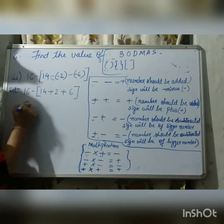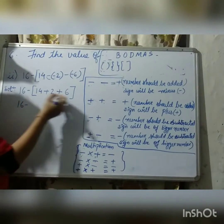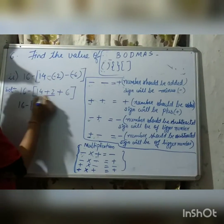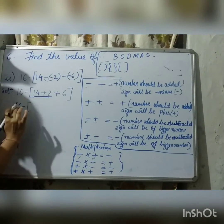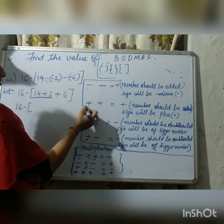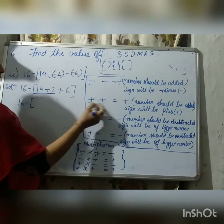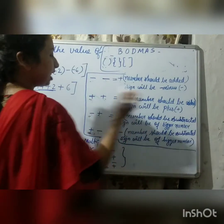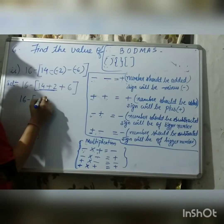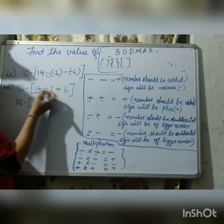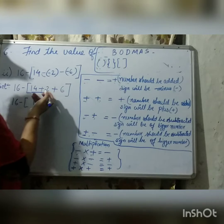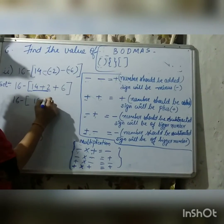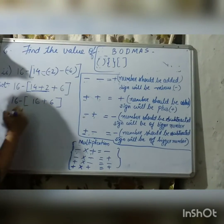Now, we'll solve the square bracket. Inside the square bracket, we'll solve the first two integers. Here, both are positive, so we follow the rule: if both integers are plus, we do plus — numbers should be added. So, 14 plus 2 equals 16. 16 will get the positive sign. Then we'll write 6 as it is and close the bracket.